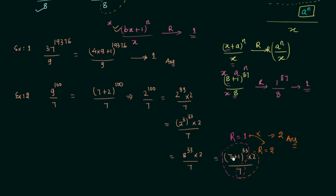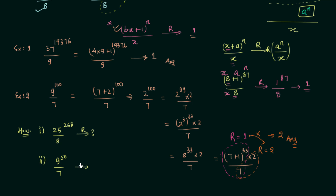We will solve a few more examples related to remainder theorem in the coming presentation. But now we will move on to the homework problems. We have two homework problems: in the first, 25 raised to power 268 is divided by 8 — find the remainder. In the second, 9 raised to power 50 is divided by 7 — again find the remainder. Post your two answers in the comment section.